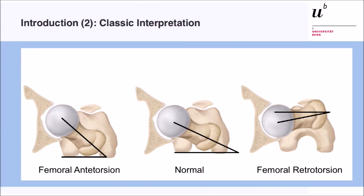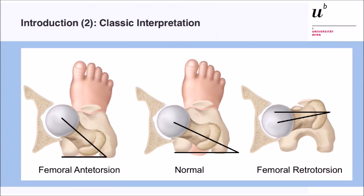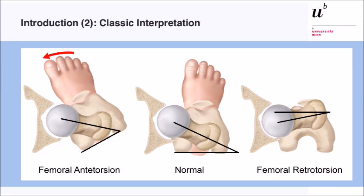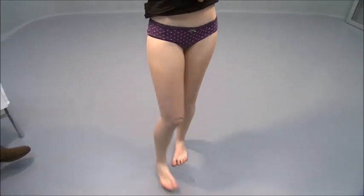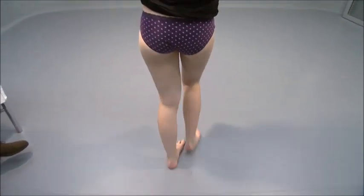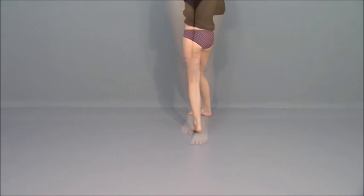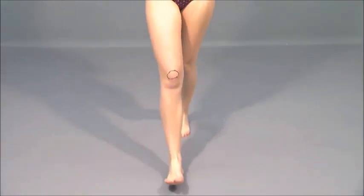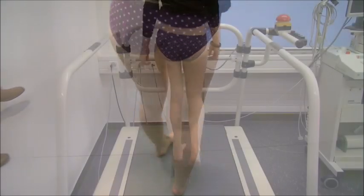This is the classic interpretation: if you have normal torsion, increased femoral torsion, or decreased torsion. Normally it is considered that you have an out-toeing of the foot by about five to ten degrees. If you have femoral antitorsion, due to your abductor mechanism this would result in in-toeing of the foot. This is how it should look like in the classic patient with high femoral antitorsion — walking with an in-toeing gait, with the patellae looking inwards.